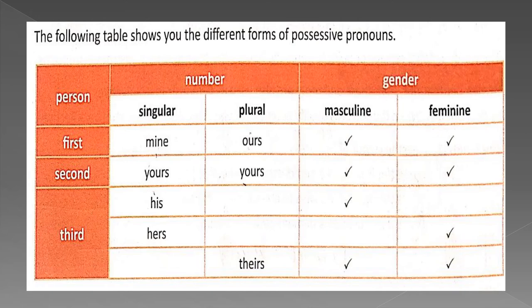Now let us look at the table showing the different forms of possessive pronouns. First person singular is 'mine' and plural is 'ours'. Second person singular and plural is 'yours'. Third person: his, hers, its — and the plural is 'theirs'. Now for your homework, let us take page number 21 and do the given exercises in your textbook. Thank you.